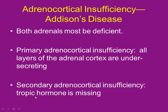Secondary Addison's means a tropic hormone is broken — ACTH or CRH could be the problem. If you're not making cortisol, the hypothalamus says 'turn up,' making more CRH and ACTH — but it doesn't help. When more ACTH is made, you also make more melanocyte-stimulating hormone, causing the skin to start getting darker — giving Addison's patients a beautiful tan-looking skin.